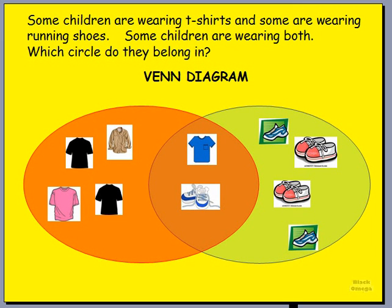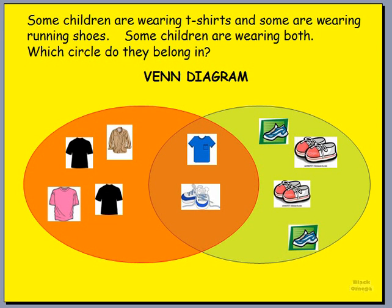They're not only wearing the t-shirts, but they're also wearing the running shoes. So we put them right in the middle of the two circles because that's where they belong when they have both. So if you're wearing a t-shirt, you put those students in the left circle. If you're wearing running shoes, you put them in the right. And if you happen to be wearing both today, you will go right in the middle, in between the two groups.